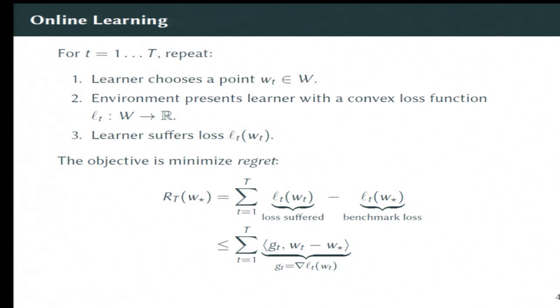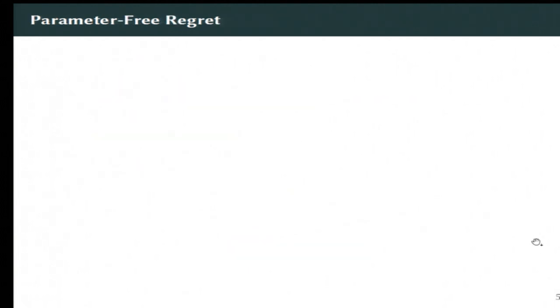And this is called online linear optimization when we're trying to upper bound this linear approximation instead of the full convex thing. And this is actually a very well-studied problem. Many of you have probably heard of it before. And a lot of the very popular stochastic optimization algorithms used today are actually online linear optimization algorithms.